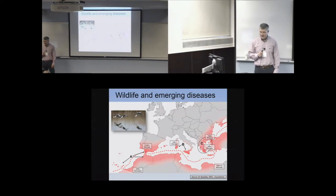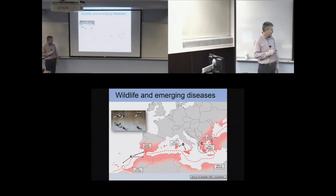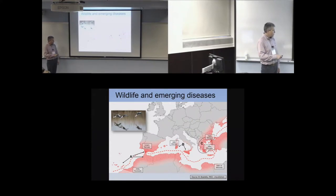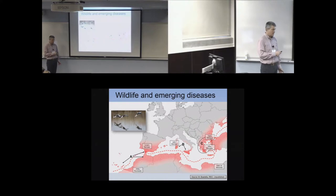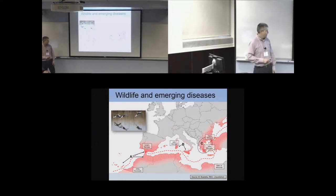Coming from Spain, one aspect of particular relevance is that we are at the migratory route of birds in western Europe and we are also so close to the coast of Africa — just 14 kilometers — that we can get, and we do get, disease agents just by the wind or by human movements.